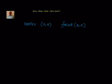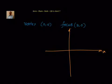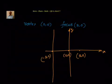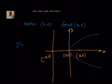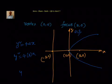Next, vertex = (0, 0) and focus = (3, 0). Drawing the graph: vertex is at the origin, focus is at (3, 0), so the directrix is at x = -3. The parabola is symmetric about the x-axis, opening to the right, so the equation is y² = 4ax. The distance from vertex to focus is 3, so a = 3. Therefore y² = 4(3)x, giving y² = 12x.